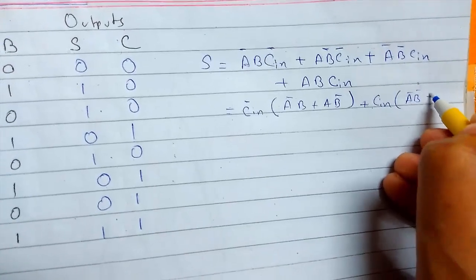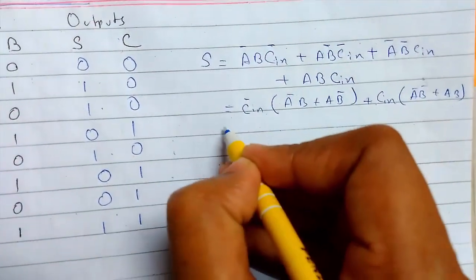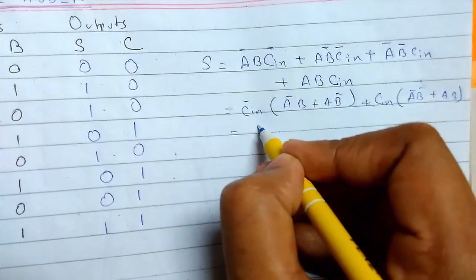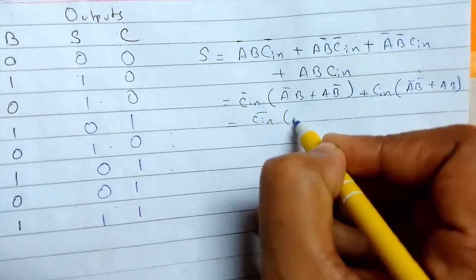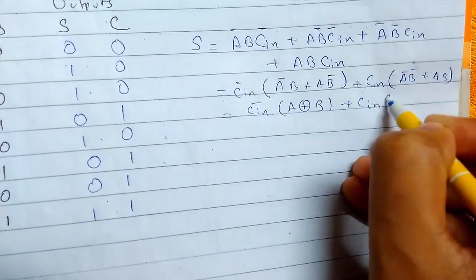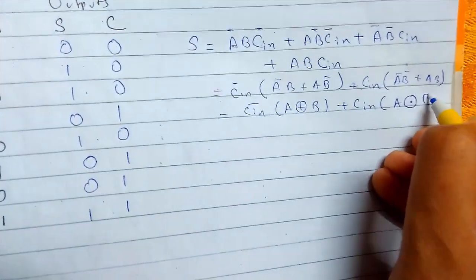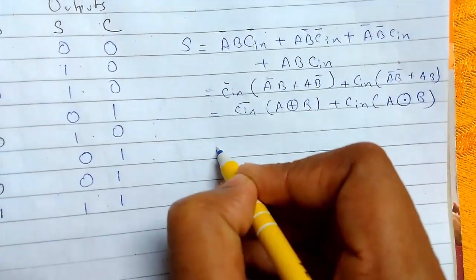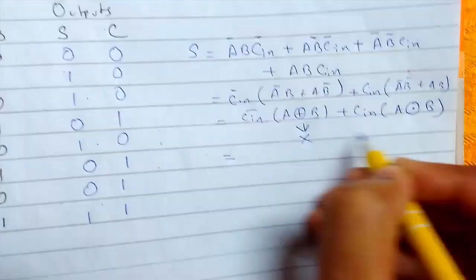From these two we are taking C-in common and getting A-bar B and A B. We know this is C-in XOR B, and this is C-in A XOR B. Now suppose we consider this part as X.